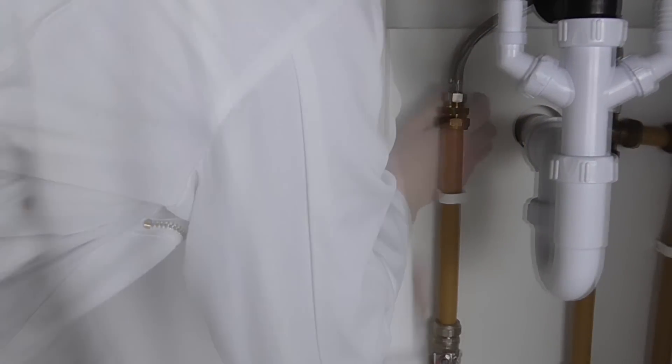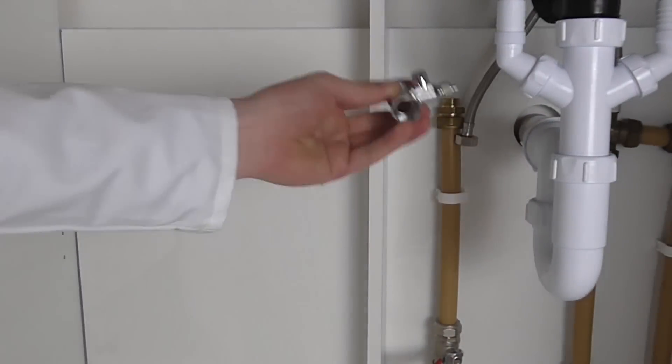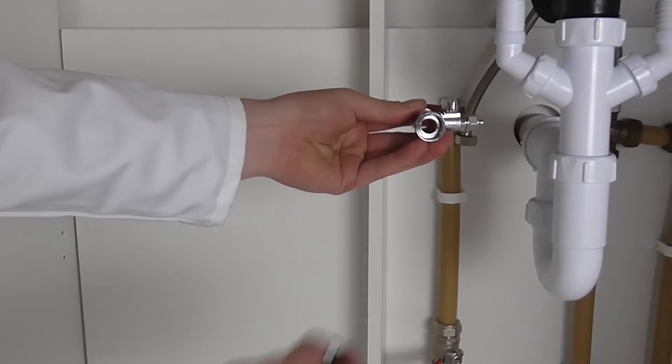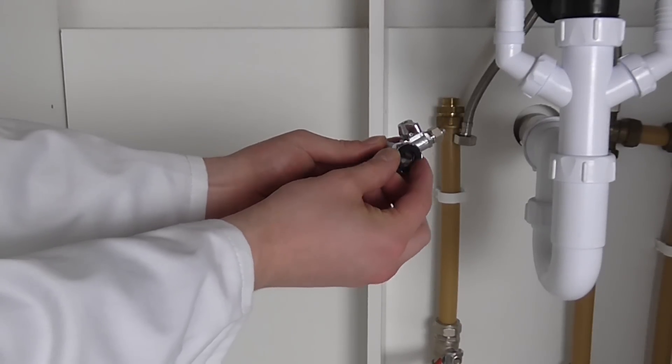To branch off your water, you can either use the T-piece or the saddle valve provided. It's not necessary to use both. In this demonstration, we'll use the T-piece.